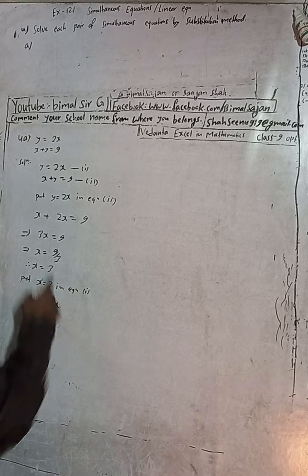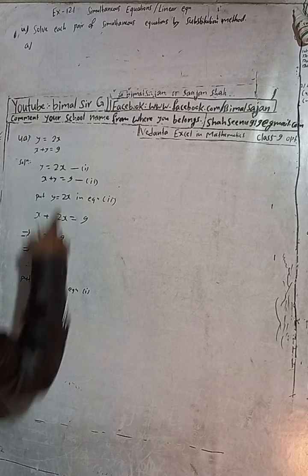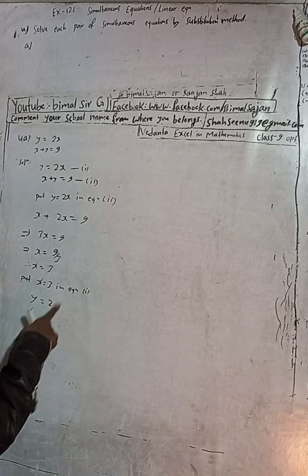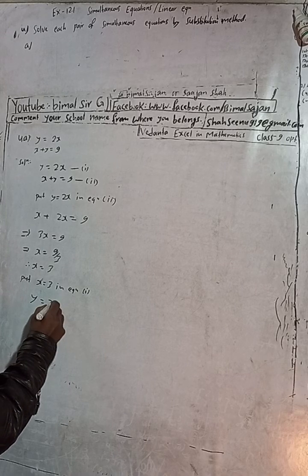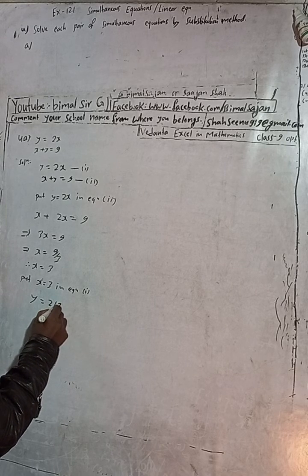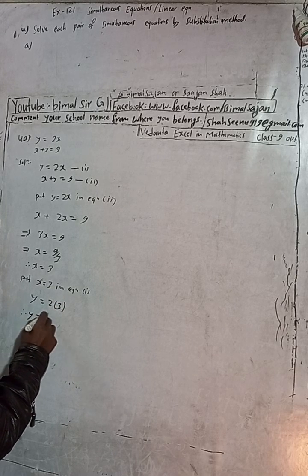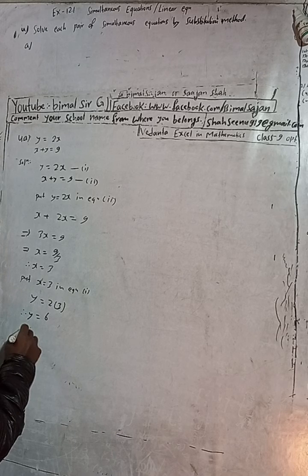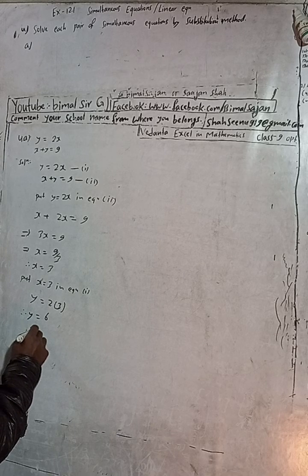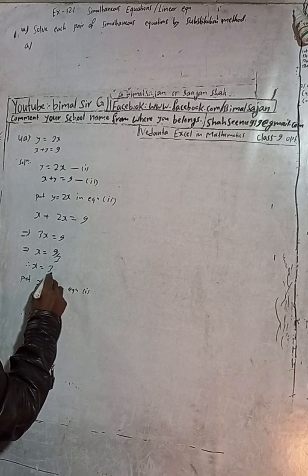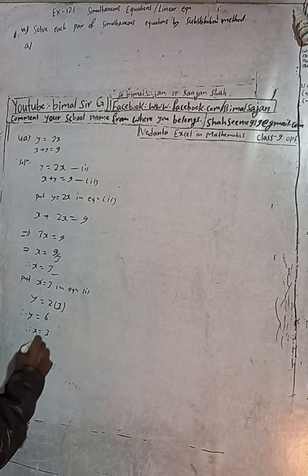Now put x = 3 into equation 1, which is y = 2x. So y = 2 times 3. Therefore y = 6. So x = 3 and y = 6 is the answer.